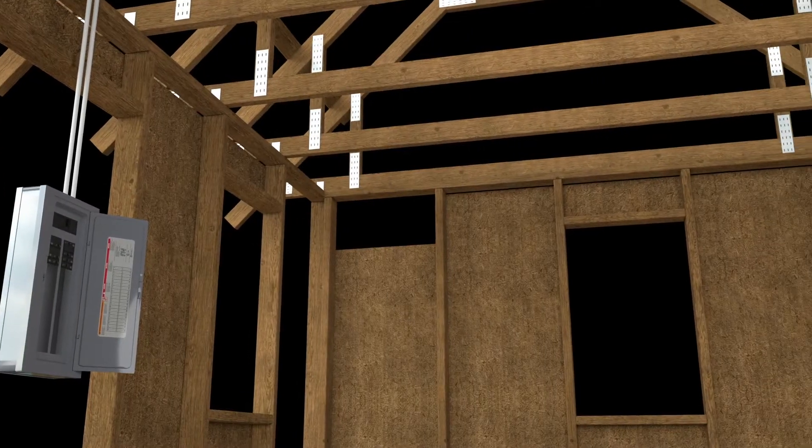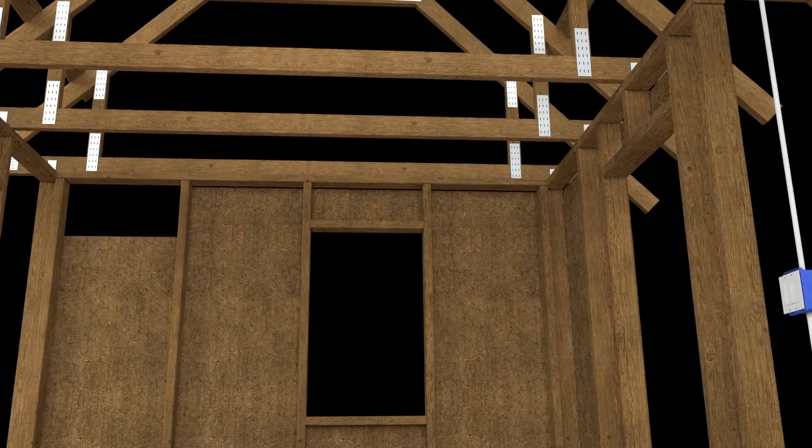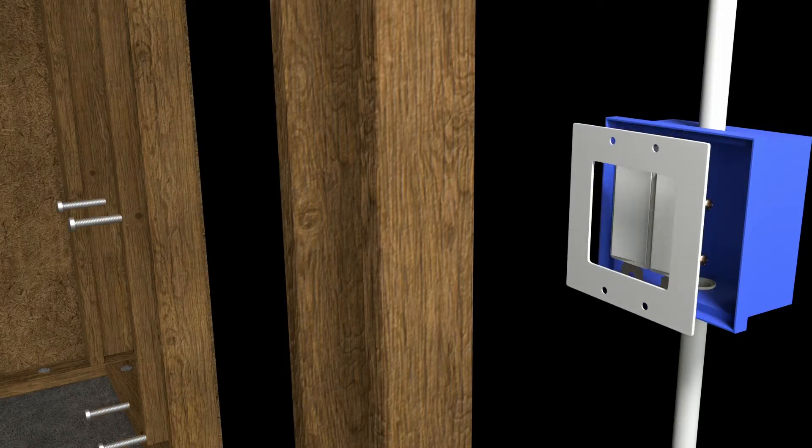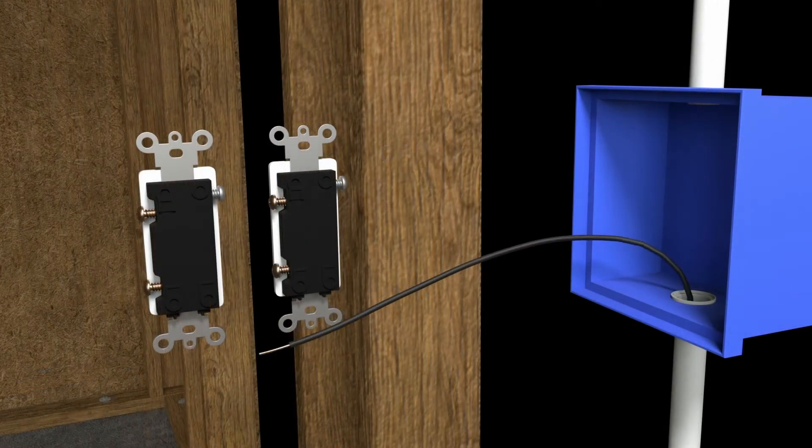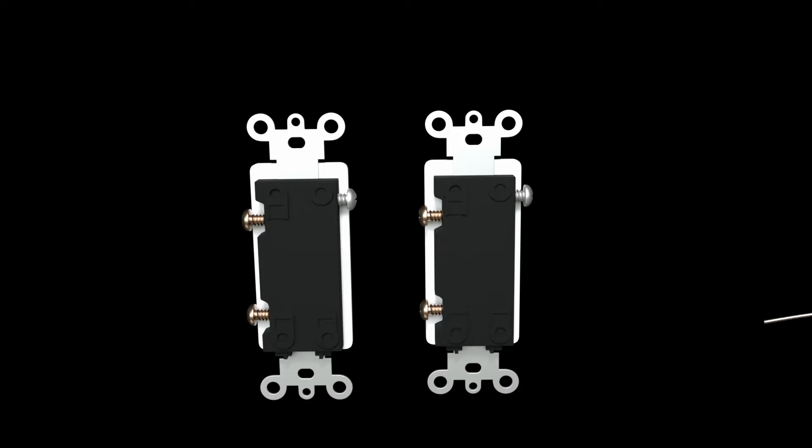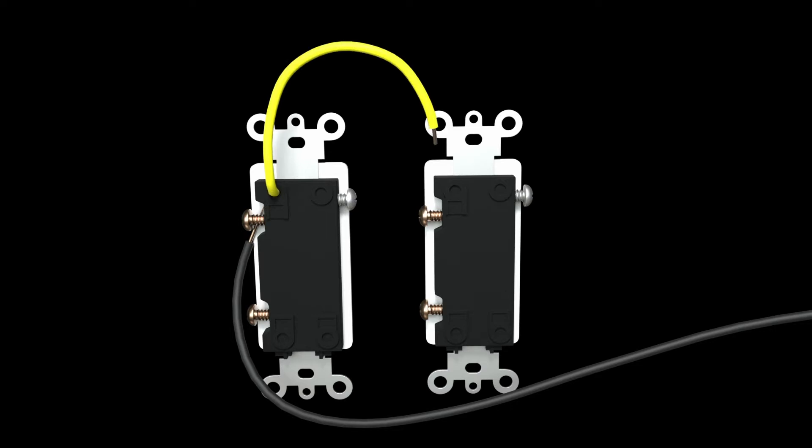We bring a single 20 amp branch circuit from the electrical panel to two wall switches. At the wall switches we attach the power conductor to the line side of a single pole switch. Then add a jumper wire from the powered switch to the second switch.